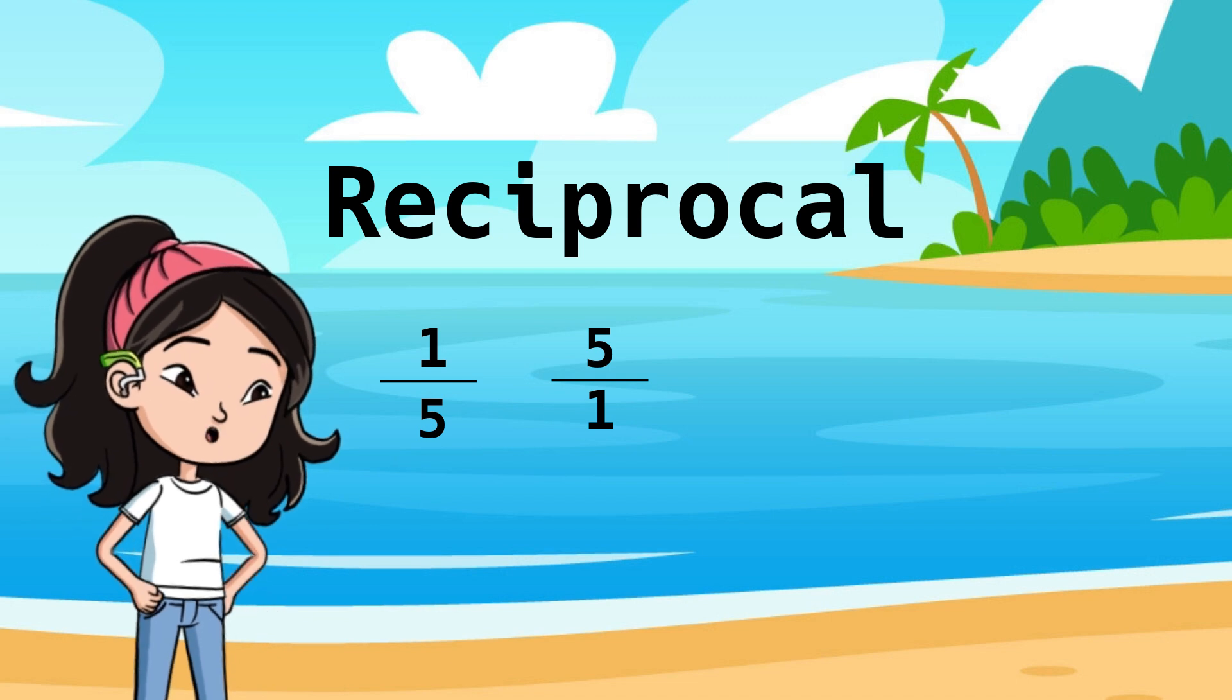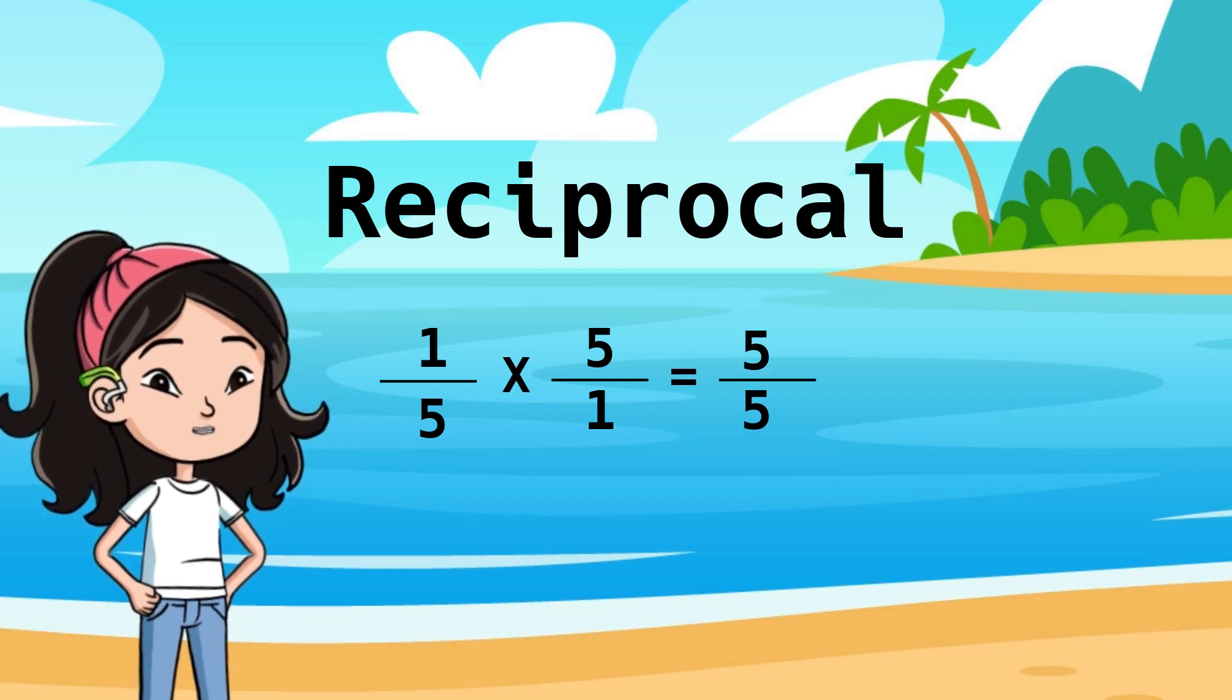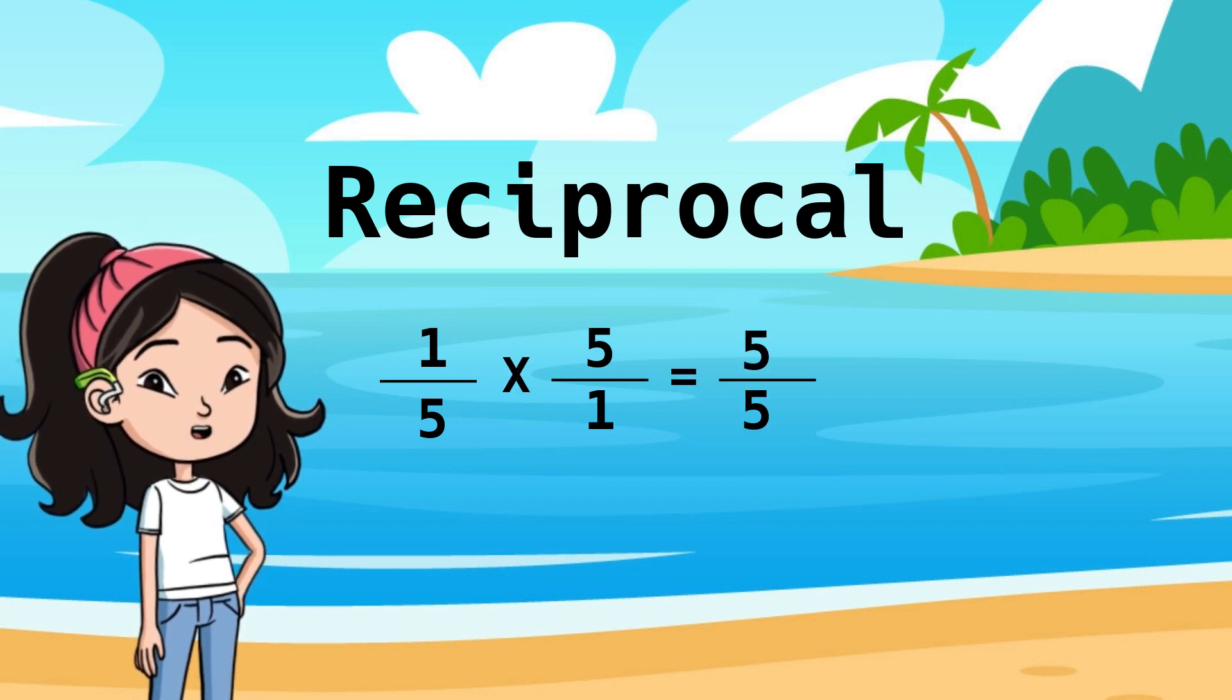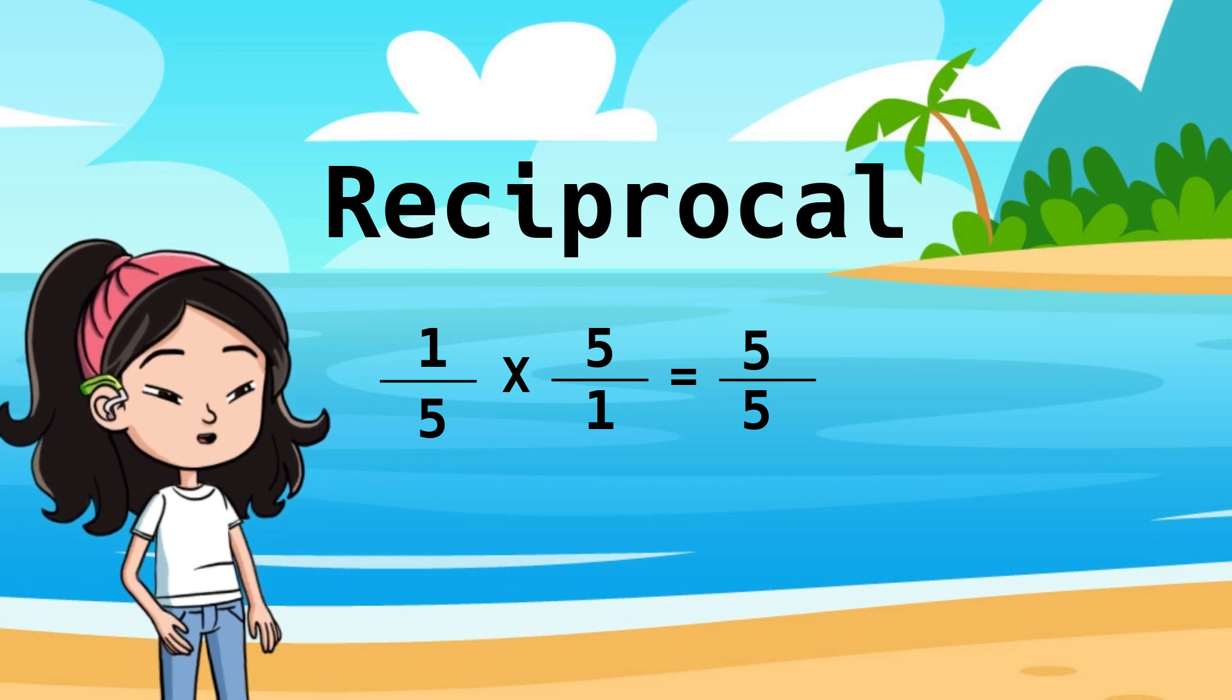Easy, right? Just a little side information. When you multiply a fraction by its reciprocal, the answer will always be 1.